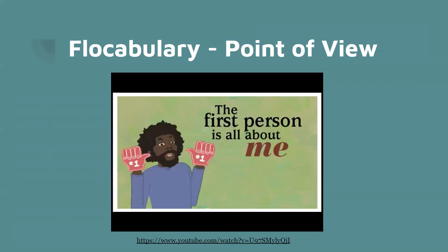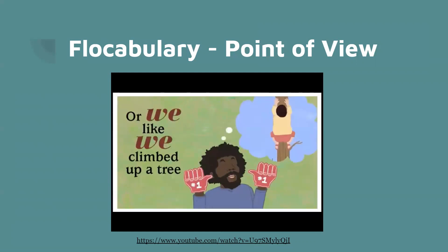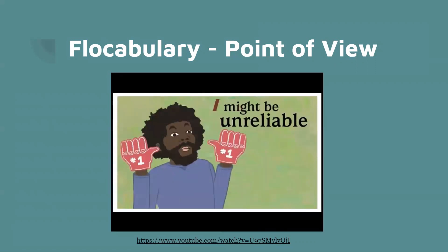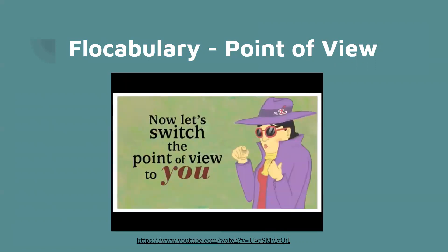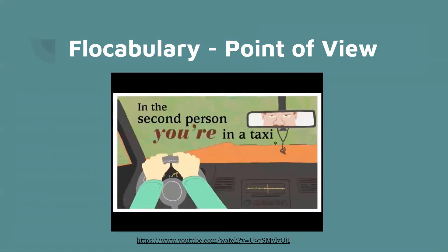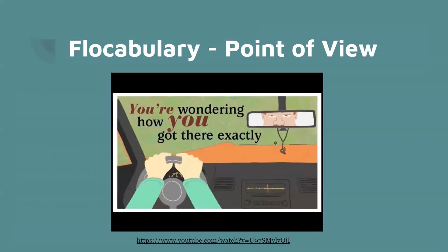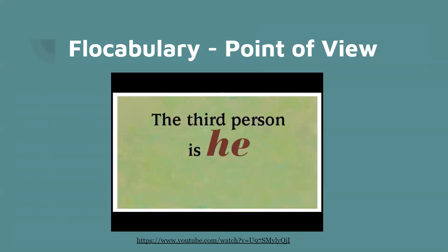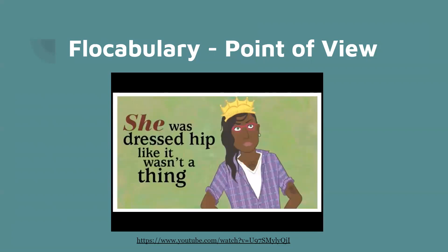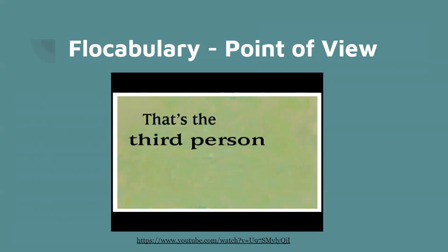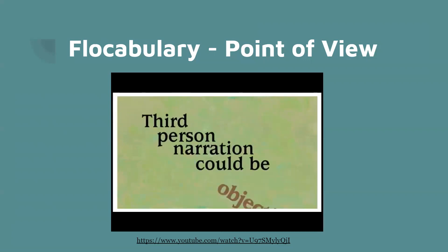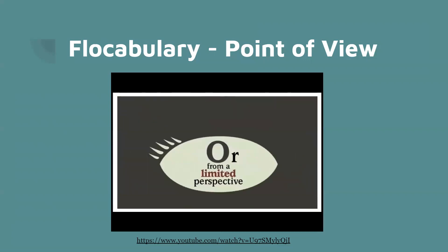The first person is all about me, or we — like 'we climbed a tree,' 'I closed my eyes and I felt the breeze.' I might be unreliable if I don't tell the truth. Now let's switch the point of view to you. In the second person, you're in a taxi, wondering how you got there exactly. The third person is he or she: 'He walked down the street and he saw the queen. She was just hip like it wasn't a thing.' Third person narration could be objective, omniscient, or from a limited perspective.